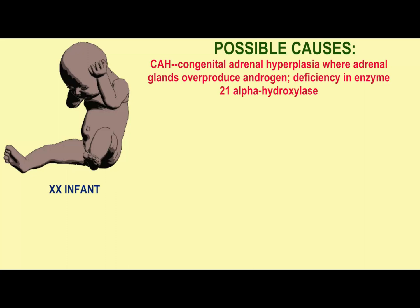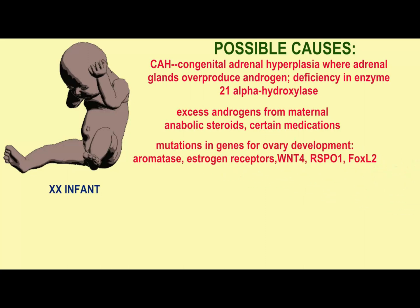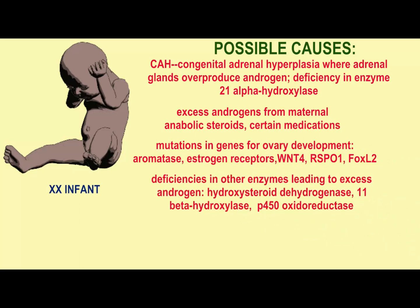A mother could be taking anabolic steroids. Certain medications given to the mother might result in this. There could be mutations in genes needed for the ovaries' development and the production of estrogen, like aromatase or the estrogen receptors.